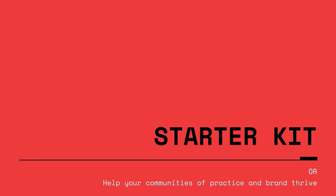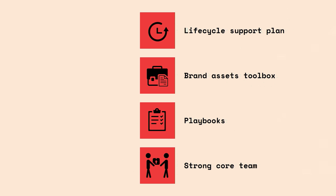So, putting together a starter kit — these are four things we've realized are really important for us as a community of practice organization. One is lifecycle support. Second is brand assets. Third is playbooks. Fourth is a strong core team.